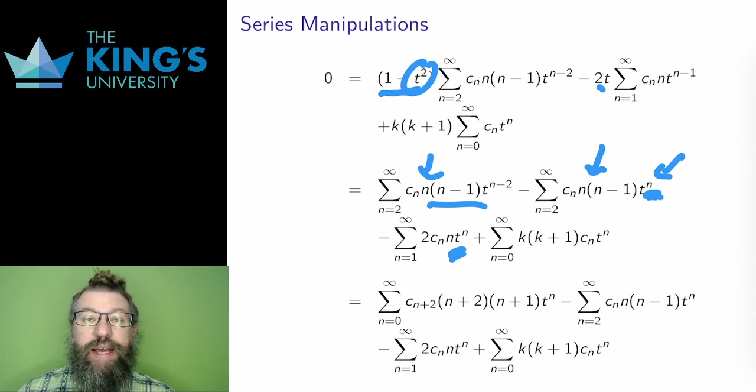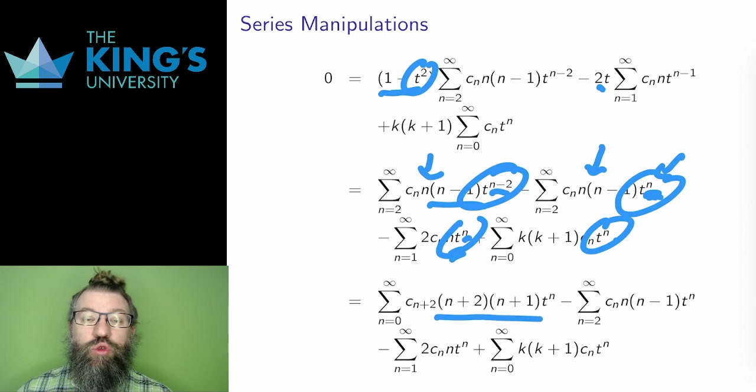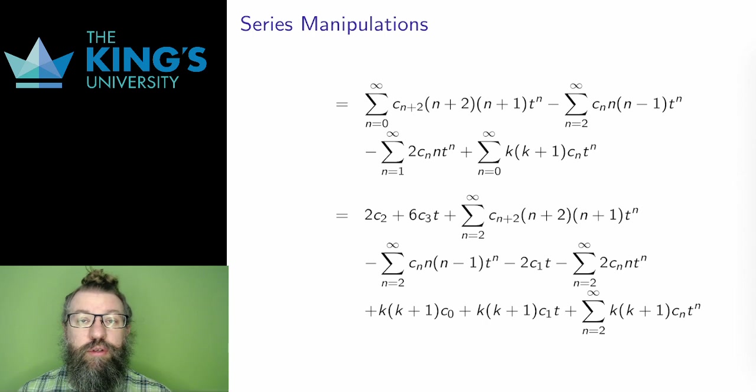Then the first thing to do is to match the powers of t. Three of the four sums have t to the n. The first has t to the n minus 2. I need to shift the first to make it match. So I subtract 2 from the bounds and add 2 to the index inside the sum to get this expression. Now all the terms have powers of t which match. The next thing to do is match the starting bounds. Since I can't shift anymore, because that would change the powers of t, instead I pull out terms to make them all start at n equals 2.